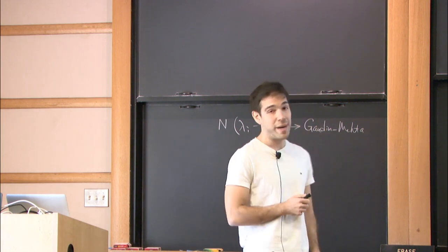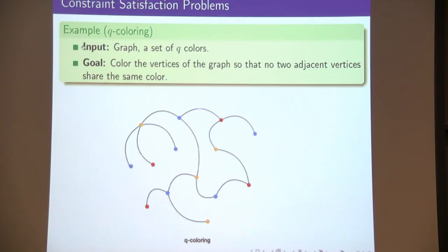This is a talk about constraint satisfaction problems. Instead of giving you the formal definition, let me give you an example. The example is the problem of two-coloring a graph. The input here is a graph and a set of two colors, and the goal is to color the vertices of the graph so that no two adjacent vertices share the same color.